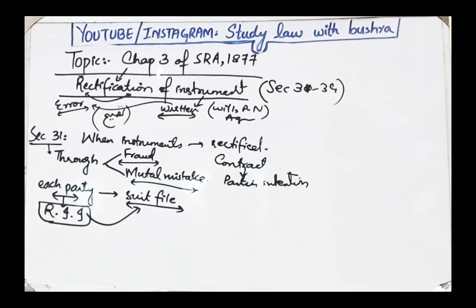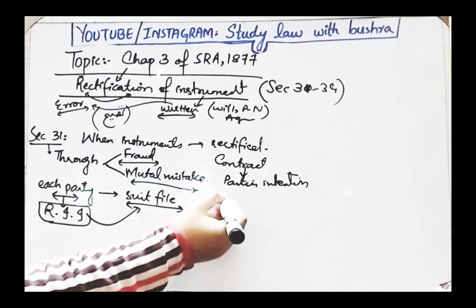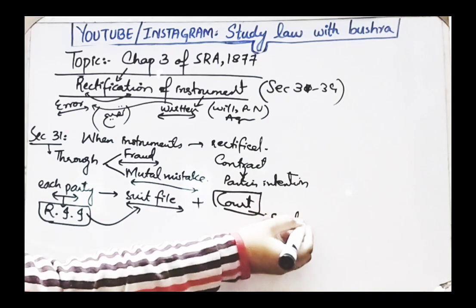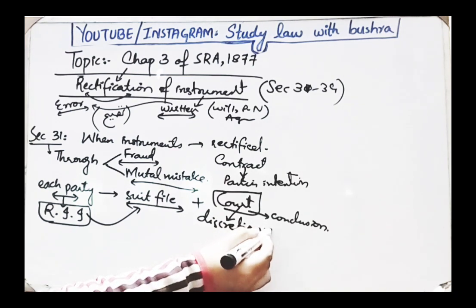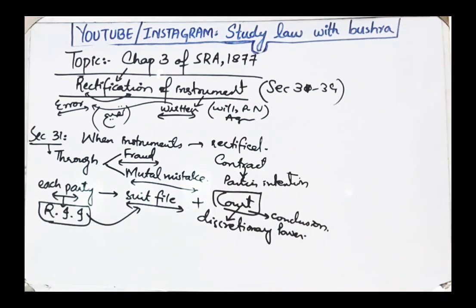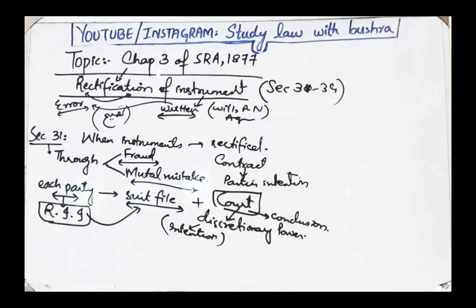Further, Section 31 states: if the court finds it clearly proved that there has been fraud or mistake in framing the instrument, or ascertains the real intention of the parties in executing the same, the court may in its discretion rectify the instrument so as to express that intention. If the court concludes that due to a party's fraud or mutual mistake, rectification is needed, then the court using its discretionary powers will rectify that instrument according to the real intention of the parties at the time the contract was made.